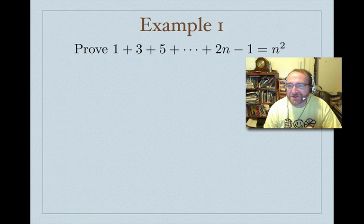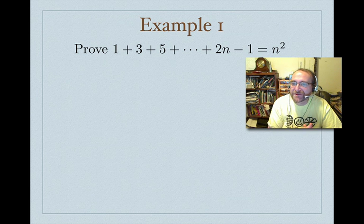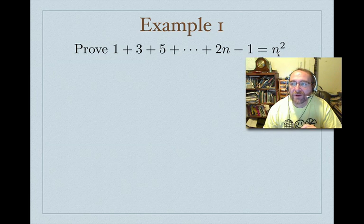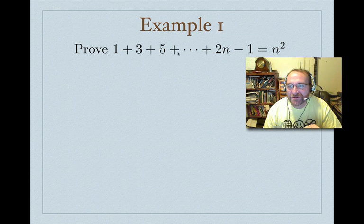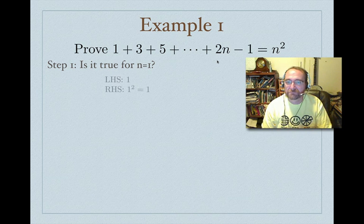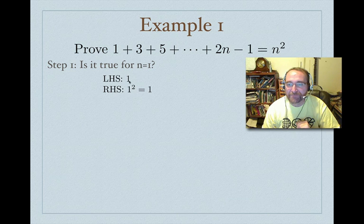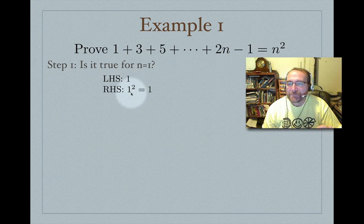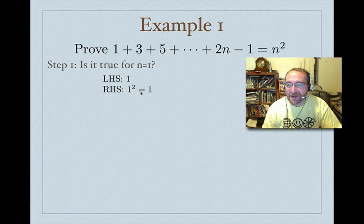Let's start with the first example: the sum of the first n odd numbers equals n squared, where the nth odd number is given by 2n minus 1. Now let's check the first case. Adding just one odd number gives us 1. On the right-hand side, n squared with n equal to 1 is also 1. They match, so the formula works when n equals 1.